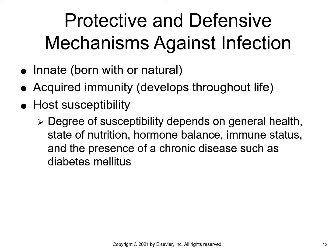The body has two forms of immunity. Innate immunity is something we are born with or naturally acquired — often part of the baby getting defensive mechanisms from the mother while in utero. Acquired immunity is something we gain throughout our life. When considering defensive mechanisms, we think about the patient's state of health, nutrition, hormone balance, immune status, and presence of any chronic disease processes such as diabetes, which influences the degree of susceptibility to infection.